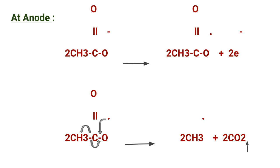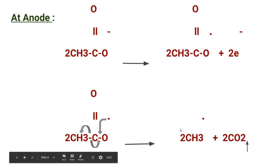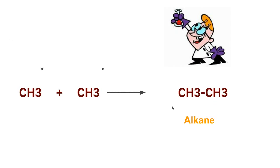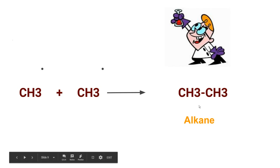Radicals are highly chemically reactive towards other substances or even towards themselves — they can dimerize or polymerize when they come in contact with each other. In this case, electrolysis produces free radicals. Two methyl radicals then combine together and form a bond, producing the alkane molecule. This is how alkane is produced by Kolbe's electrolytic method.